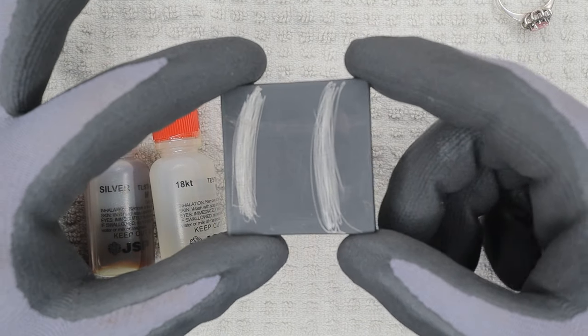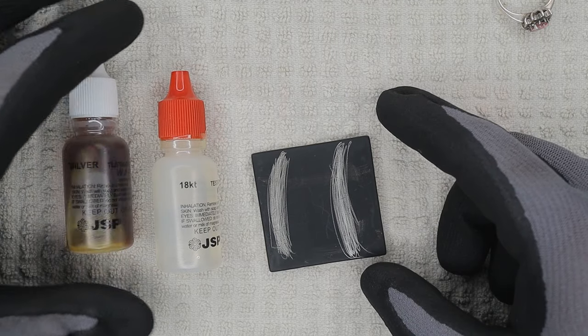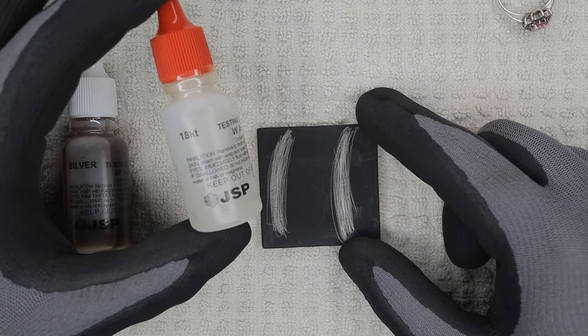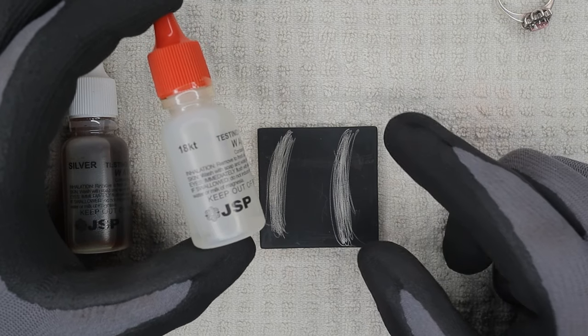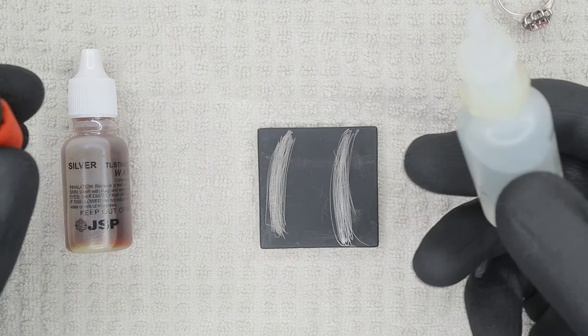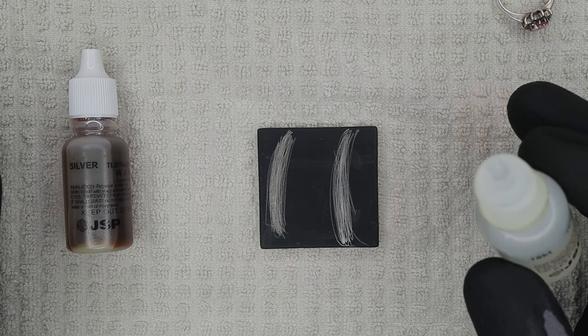First I'm going to start off with 18 karat acid. This is actually for testing gold, but it works very well for testing for silver as well. When we put the drops of the acid on, what we want to see is a milky whitish color with a blue tint. What that's going to verify is that it is silver.